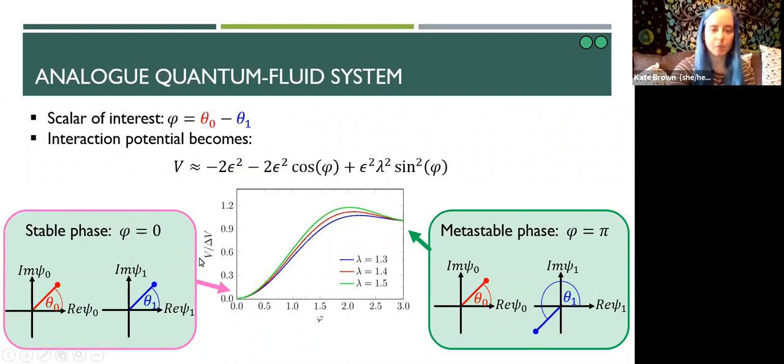Here I've plotted this potential as a function of the phase difference. And once again, we see this familiar shape. We find that we have a metastable local minimum when the phase difference equals pi. Whereas we have a stable global minimum when this phase difference equals zero and we have this potential barrier in the middle. The parameter lambda sets the height of this potential barrier. Whereas the parameter epsilon is used to set the difference in energy between the stable and metastable states.